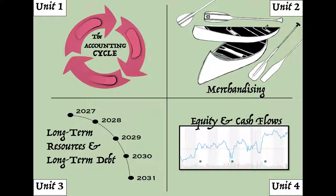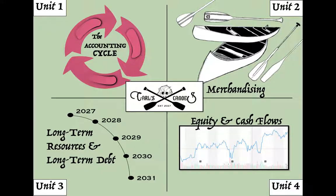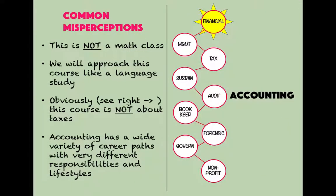The fourth unit we'll be looking at equity, stocks, and cash flows. We're going to do that throughout these videos using a made-up company called Carl's Canoes. Carl's Canoes is going to start out as a business that rents canoes for people who want to go out and have a good time — we'll start with that premise.